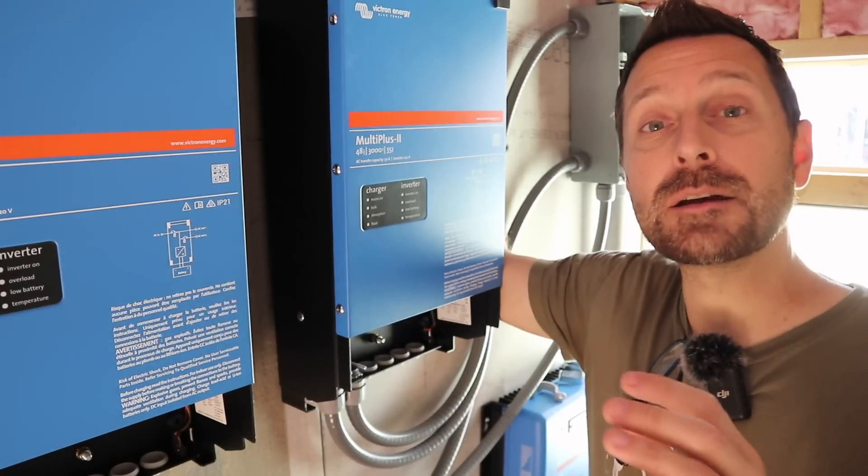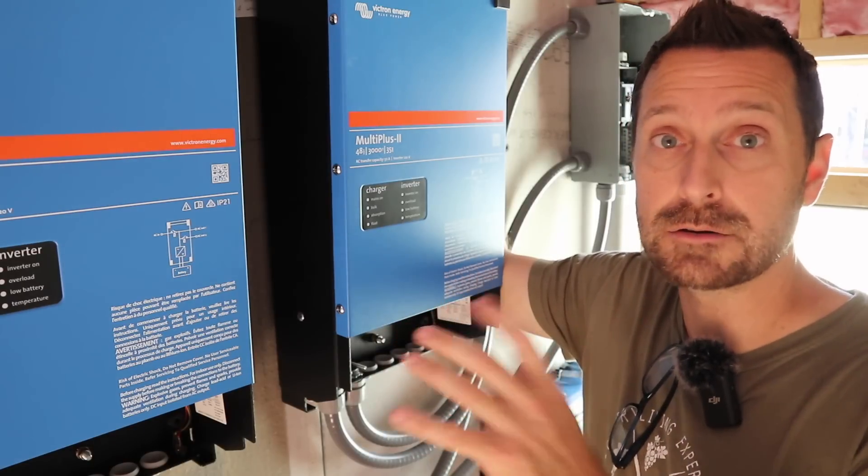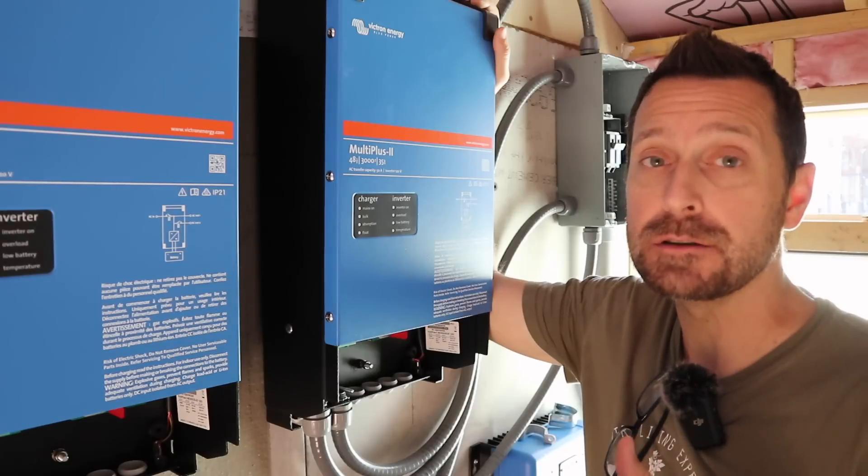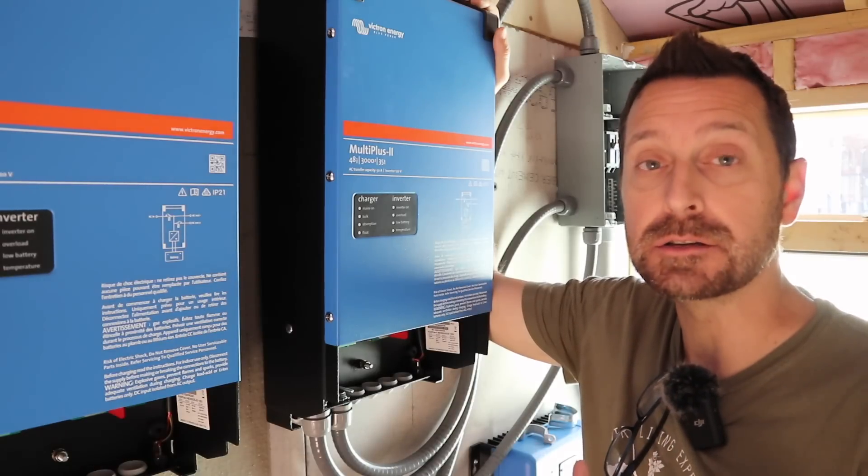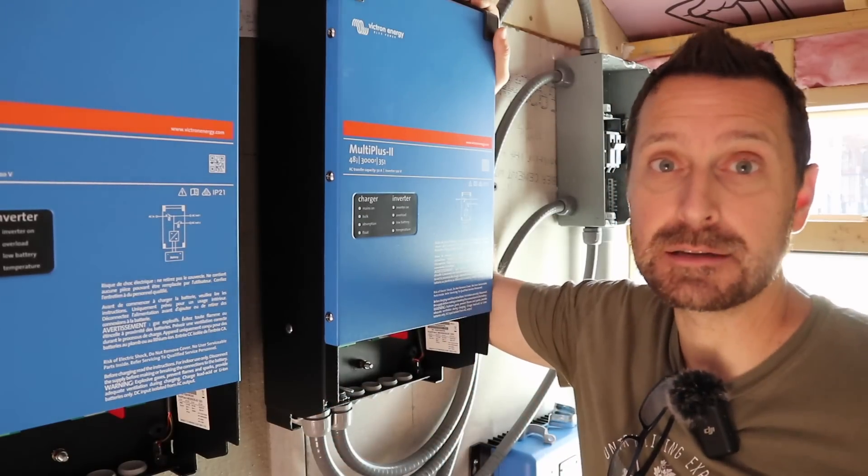If you are interested, all of this equipment is sold by Signature Solar and I've placed all the individual links in the description below the video. Don't forget to stick around for the next video in this series, in which we will be wiring everything together. So you don't want to miss that. I know Victron systems can look like a big challenge, but besides a few little quirks to them, they are super easy to put together.